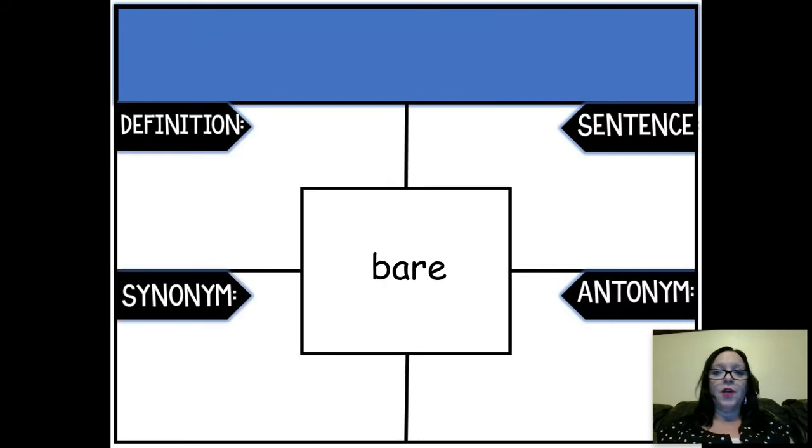Our second word is bare. Notice it's spelled B-A-R-E and not B-E-A-R. So it's not like a bear, like a grizzly or a brown bear. This is the bare as in basic or simple, kind of like plain. Remember that vocabulary word?